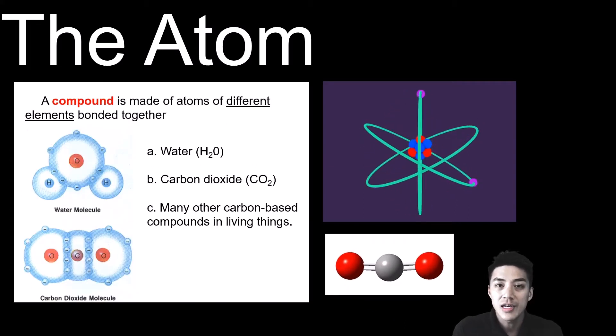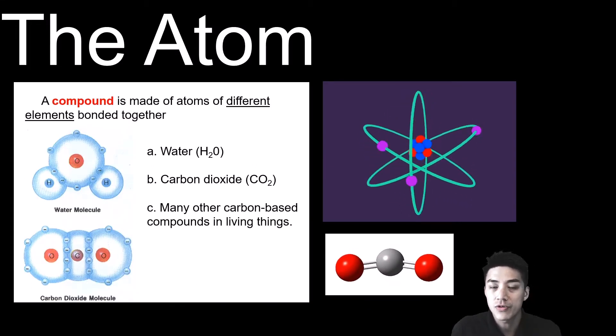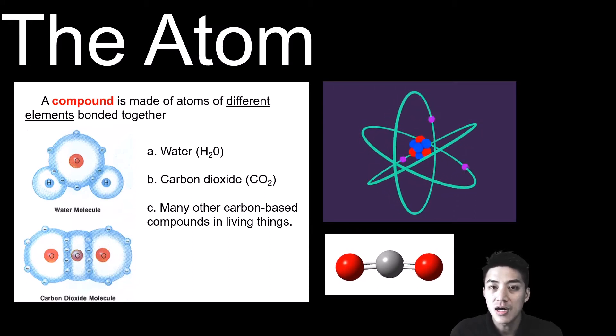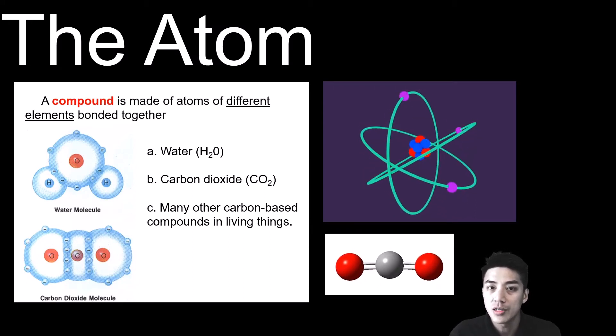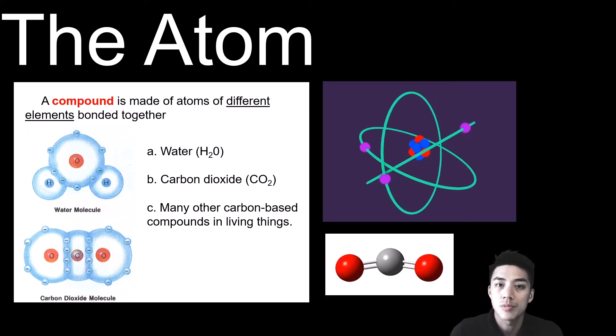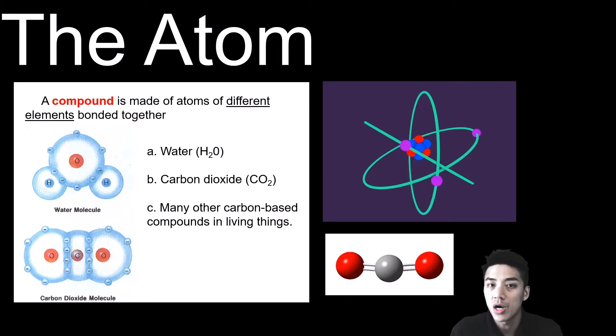Atoms of different elements can link up and bond together to form different compounds and molecules. In the illustrations to your left, you can see how water is formed when hydrogen bonds and shares electrons with oxygen. You can also see how CO2 or carbon dioxide is formed when oxygen bonds with carbon.